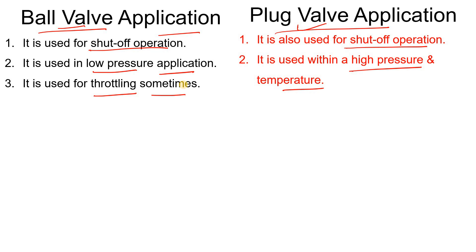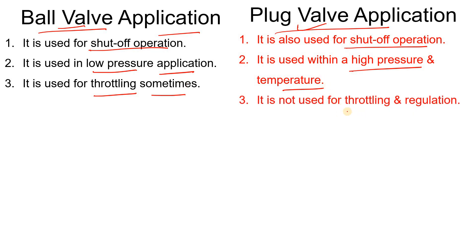Ball valves are sometimes used for throttling purposes. Most of the time, globe valves are used as control valves for throttling, but I have also seen ball valves used for throttling where high accuracy is not required. If high accuracy is required, you would use a globe valve or angle valve. But if minimum accuracy is acceptable, you can use the ball valve. In an off-site plant I have seen the ball valve used as a control valve. For the plug valve, I haven't personally seen it used for throttling, though some articles say it can be used as a control valve.